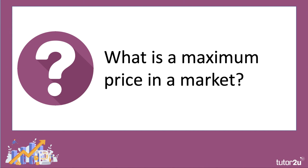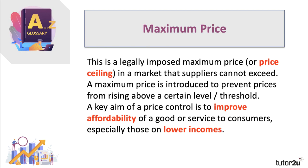Government price controls are basically situations where the government sets prices for different goods and services, and a maximum price is best defined as a legally imposed or statutory maximum price, or price ceiling. Now if that's introduced in the market, suppliers cannot exceed that price — they can't charge a price above the price cap. Essentially it's introduced to prevent prices rising above a certain level or threshold, and one of the key aims often is to improve affordability of a good or service, from food price caps to rental controls, especially trying to help affordability for families and households on relatively low incomes.